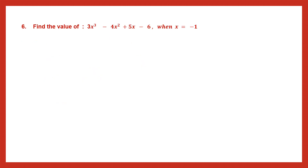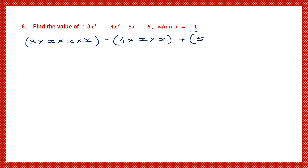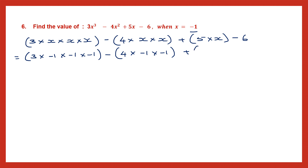Question 6: find the value of 3x cubed minus 4x squared plus 5x minus 6, and here the value of x is given as minus 1. So let's begin. 3 into x cubed is 3 times x into x into x — that is the first term — minus 4 into x squared, which is x into x, plus 5 into x, and then we have minus 6. So we're going to substitute the value of x with minus 1. So 3 into minus 1 into minus 1 into minus 1, then minus 4 into minus 1 into minus 1, plus 5 into minus 1, and then minus 6.